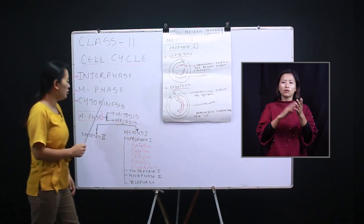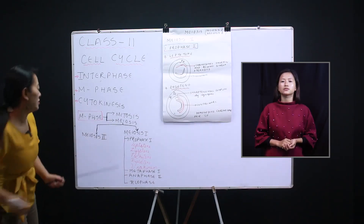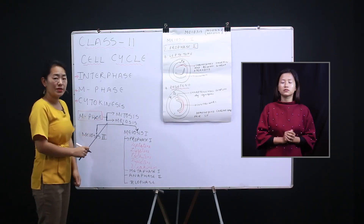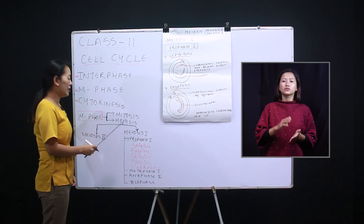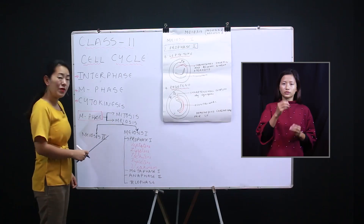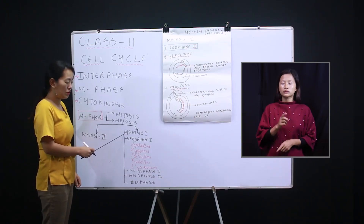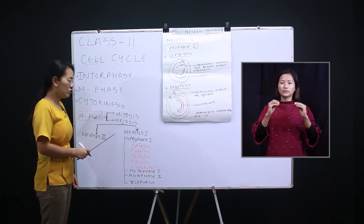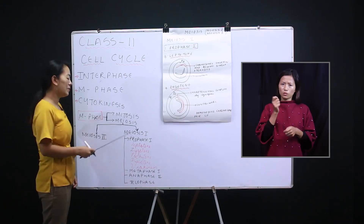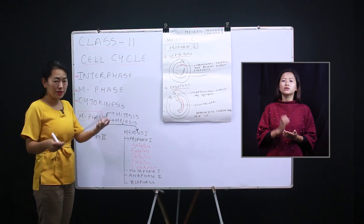Today we're going to talk about meiosis. When you look at the M phase, it is further divided into mitosis and meiosis. Remember that meiosis is again divided into phase one and phase two. They are divided because the chromosomes work in a different way in each phase.